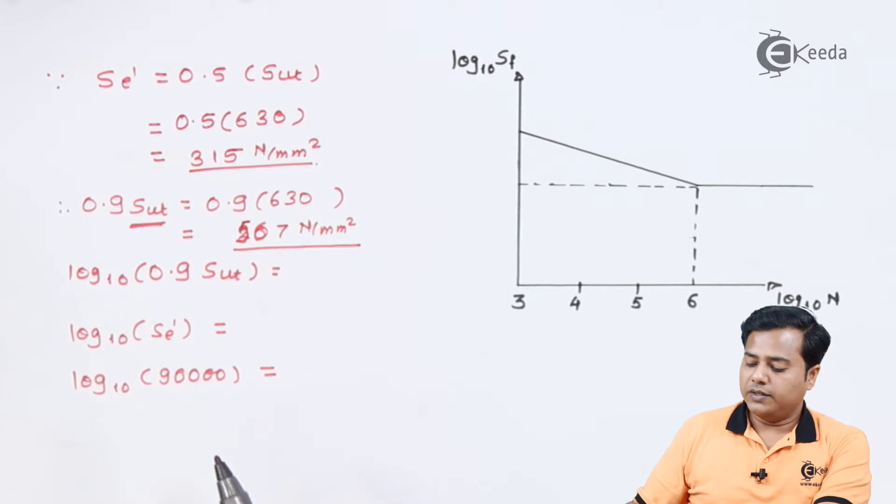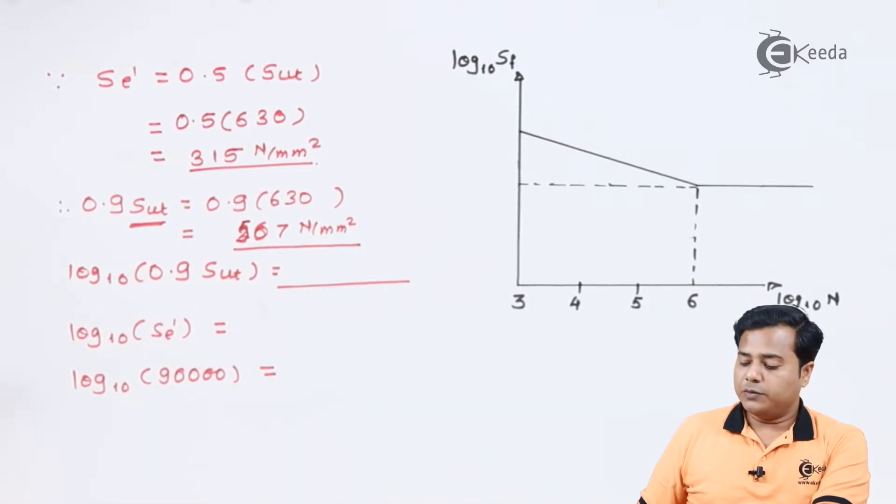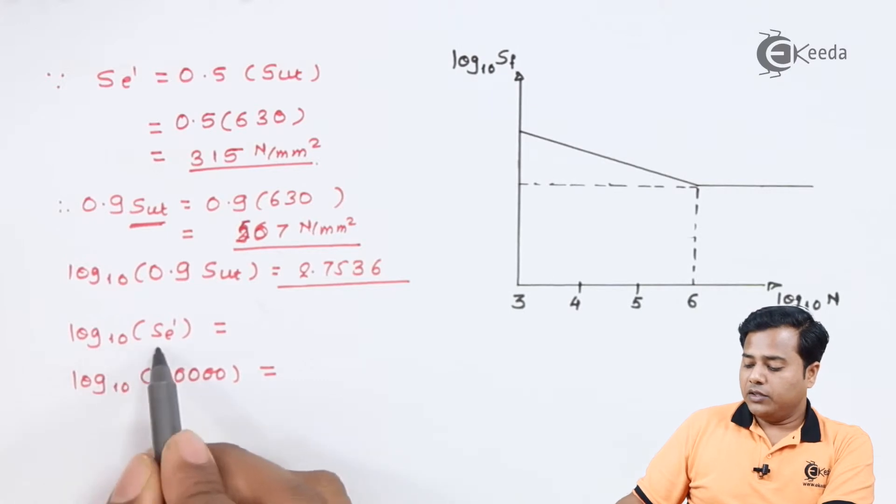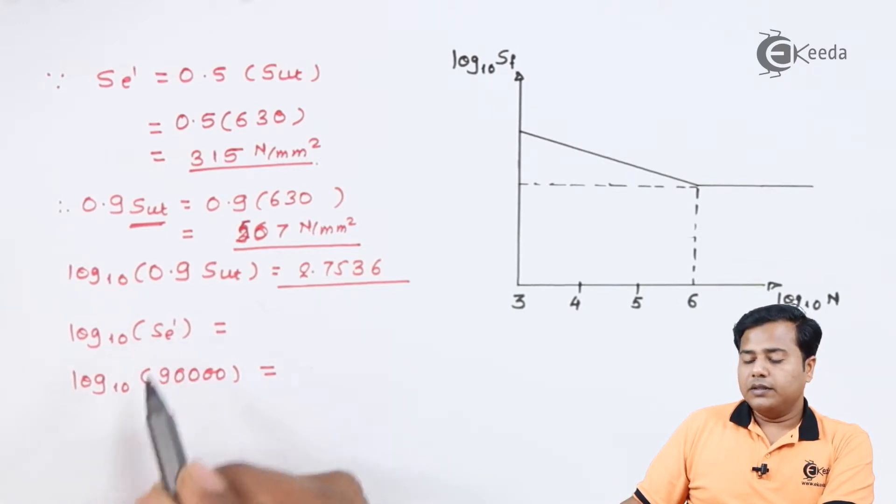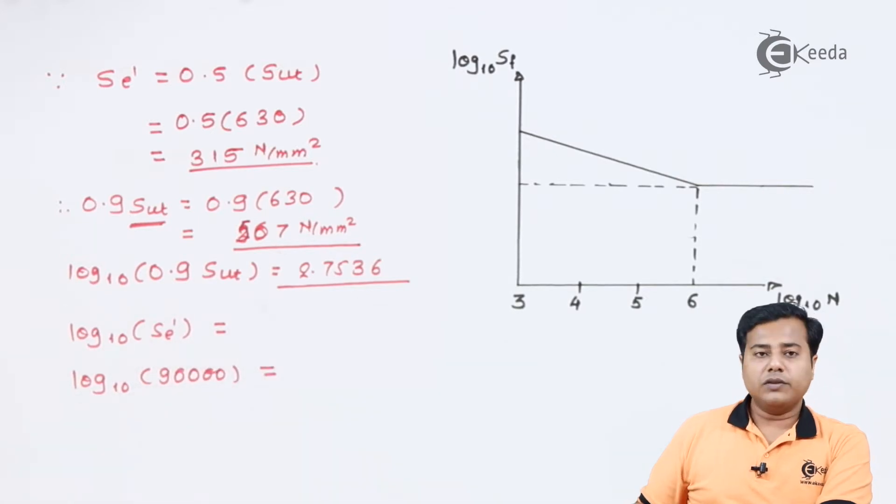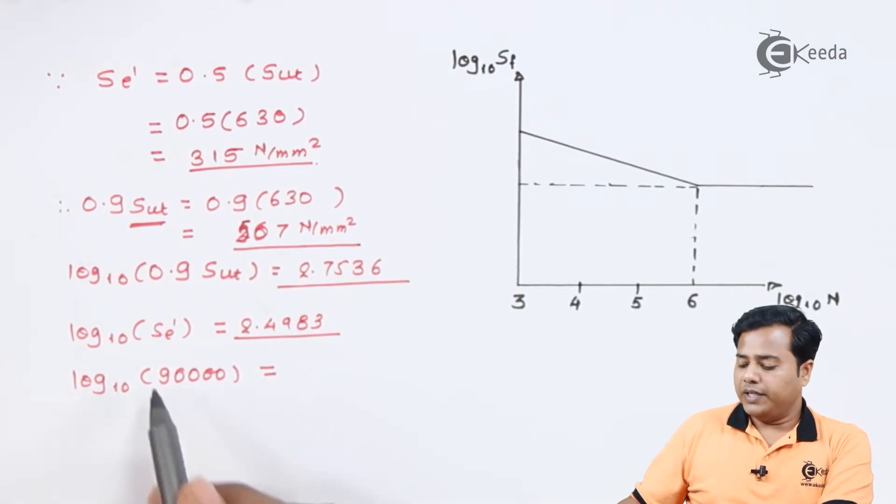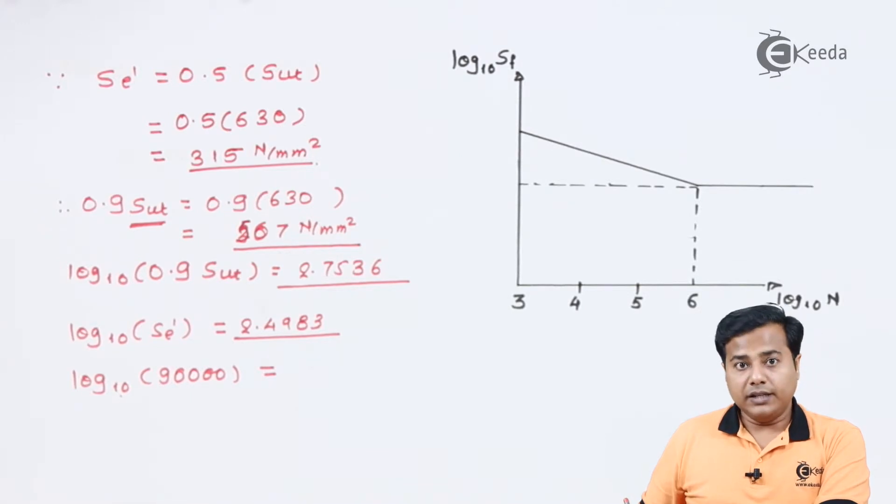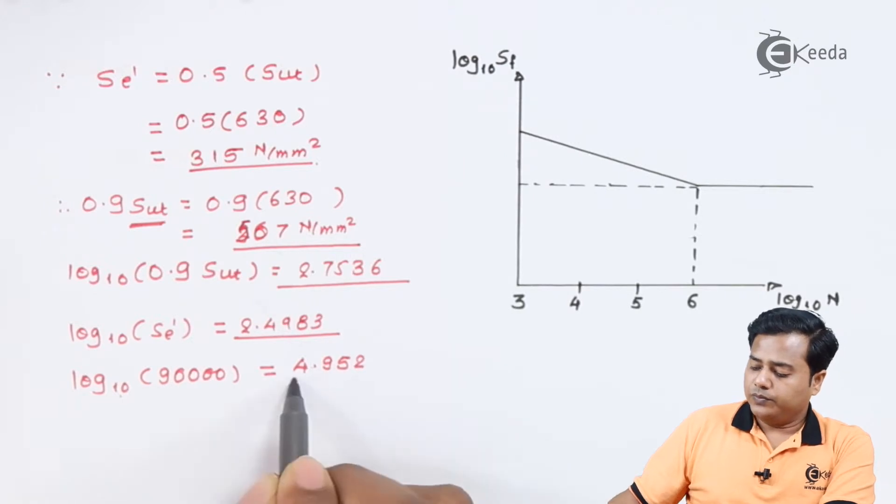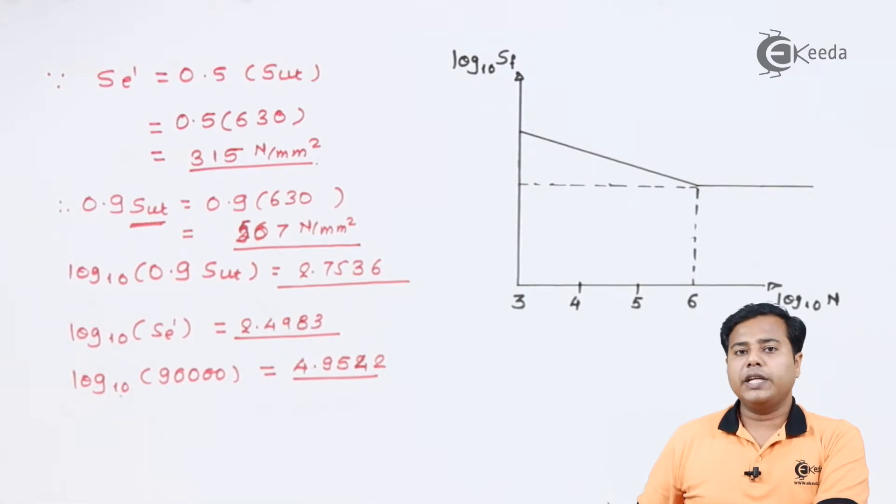Now let us go for the log. Log to the base 10 of this particular value comes out to be 2.7536. Next thing is log to the base 10 of the endurance limit, the theoretical of course. As we solve this, we'll get the value somewhere around 2.4983. Ahead of this, we will require log to the base value of the number of cycles, which is 4.9542, precisely 9.42. After finding out all these values, let us proceed to plot the S-N curve.